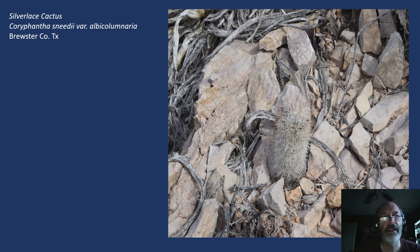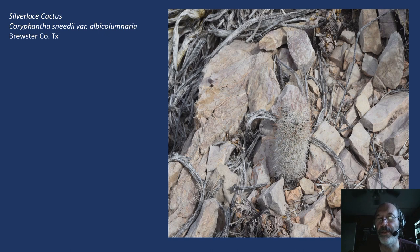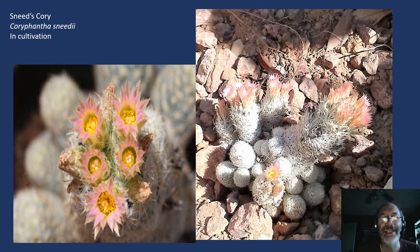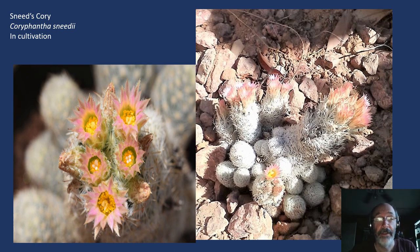Here's another one of the specialists, the Coryphantha sneedii complex. This particular one, albicolumnaria, I'm pretty sure has been given species status, but at one point it was considered a variety of sneedii. There are several varieties of sneedii in the Chihuahuan Desert. It's a medium-sized Coryphantha — a large one might be three or four inches tall. There's basically variety sneedii, variety guadalupensis, and variety leei, which are easy to identify in the field because they're found in particular mountain ranges.